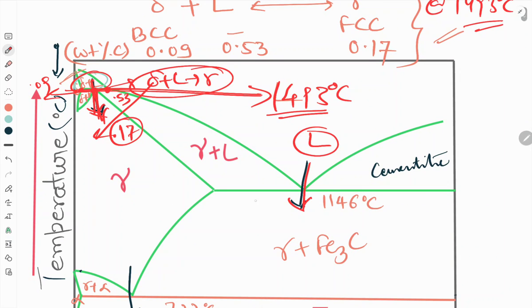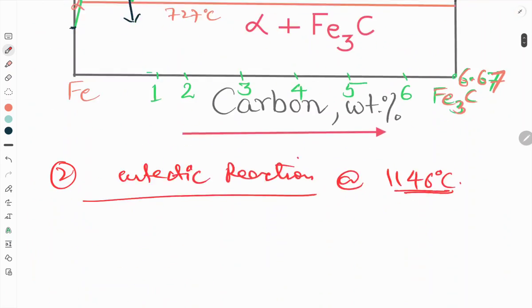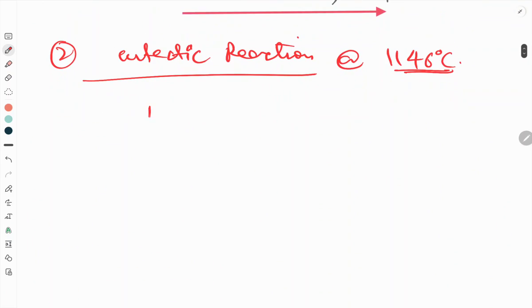So this is the eutectic reaction at 1146 degree temperature. In this reaction what happens? Liquid changes on heating and cooling. Generally we call it a cooling reaction. So liquid cools to gamma plus Fe₃C. Liquid has no structure.